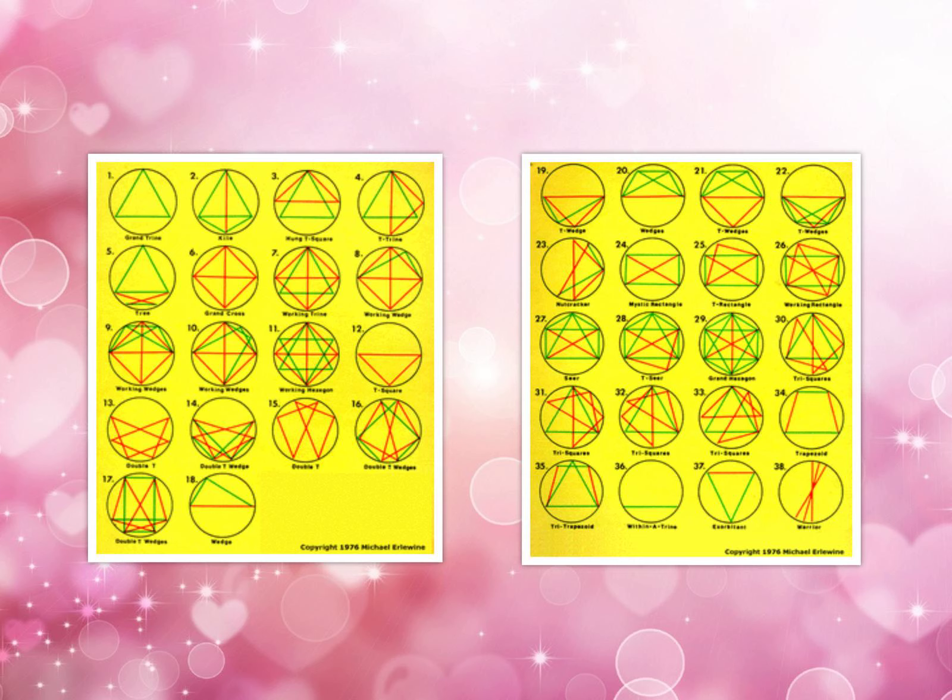There is a difference between open patterns and closed patterns. For example, the T-square: when somebody brings one planet to your isolated square, although it is a fully closed geometric pattern, a square triangle, in astrological terms it's still an open pattern.